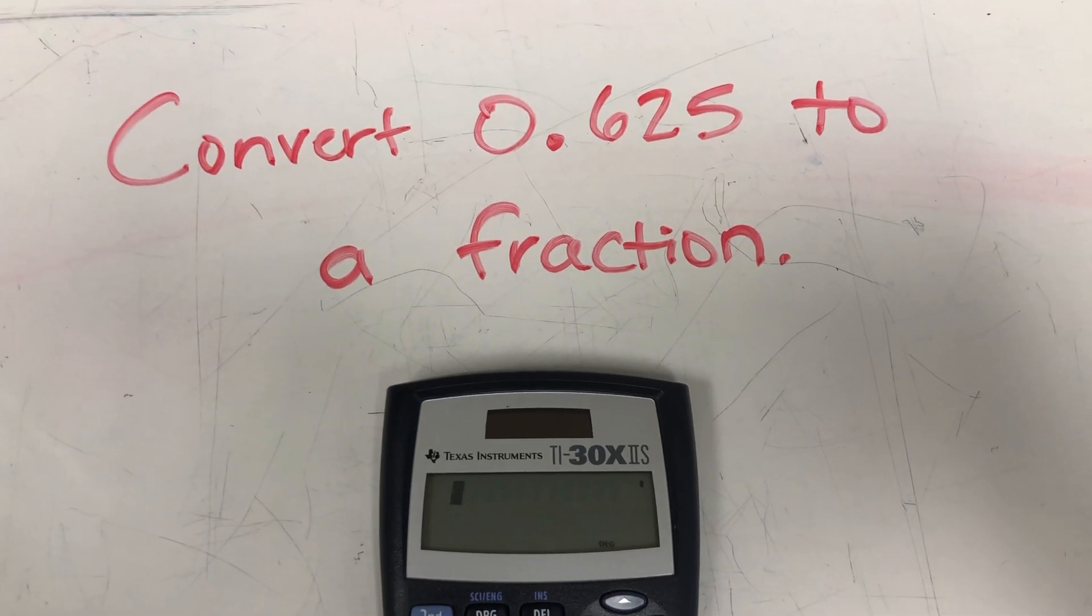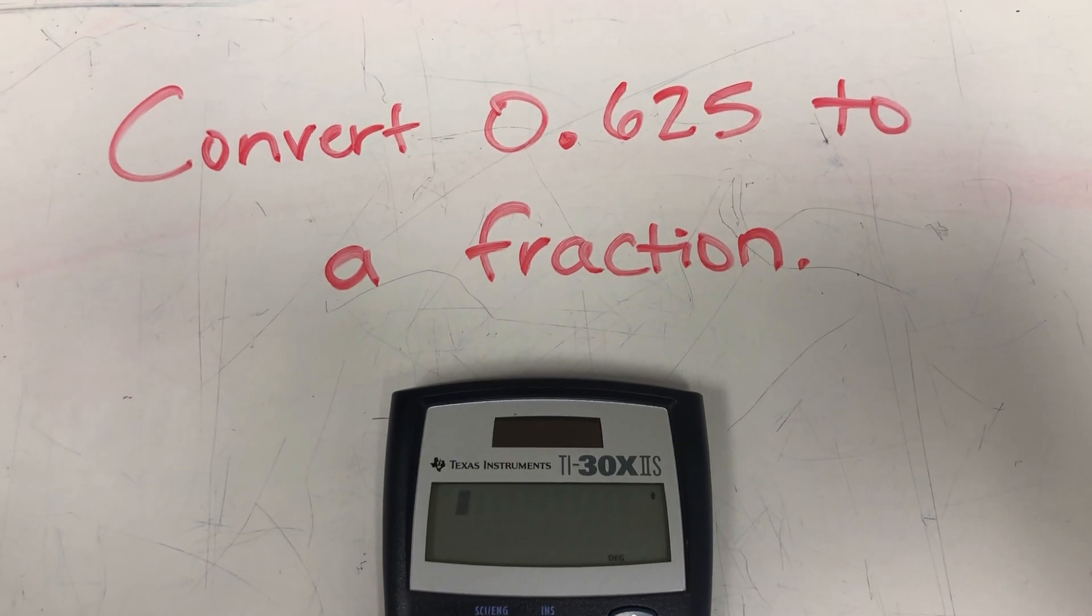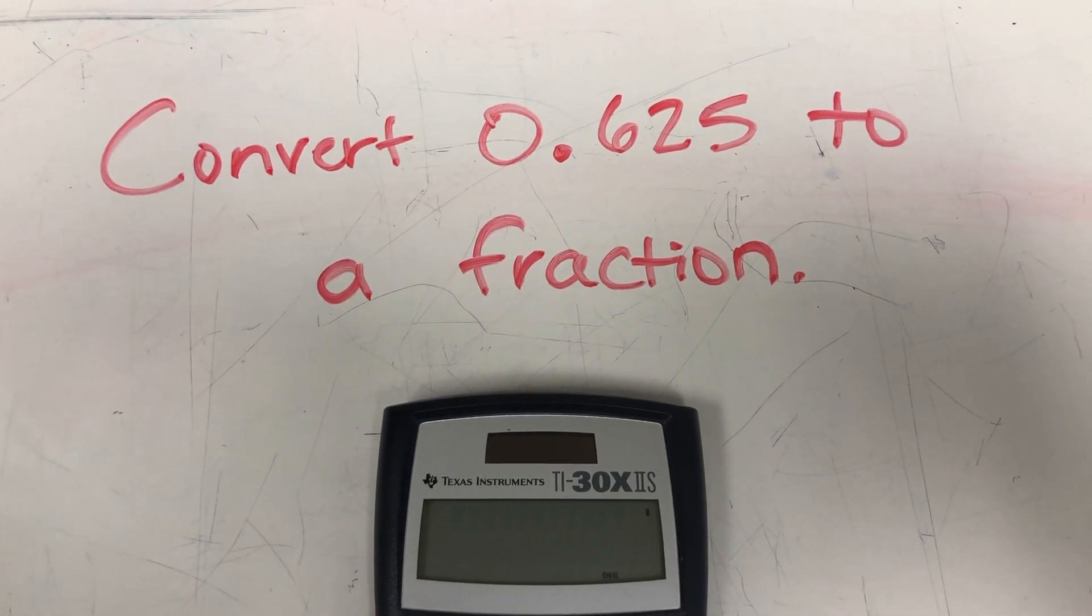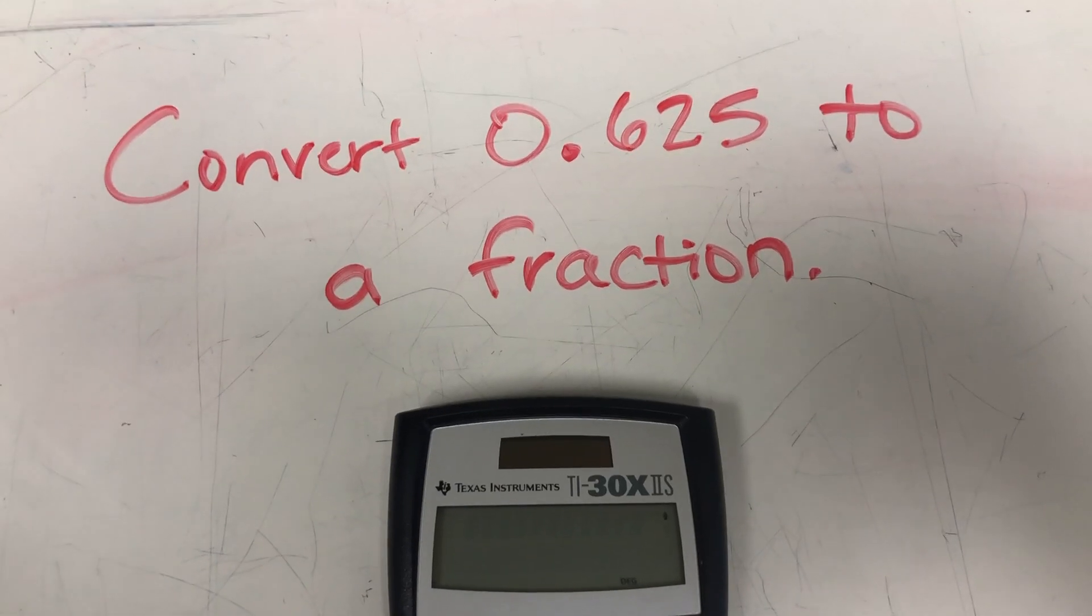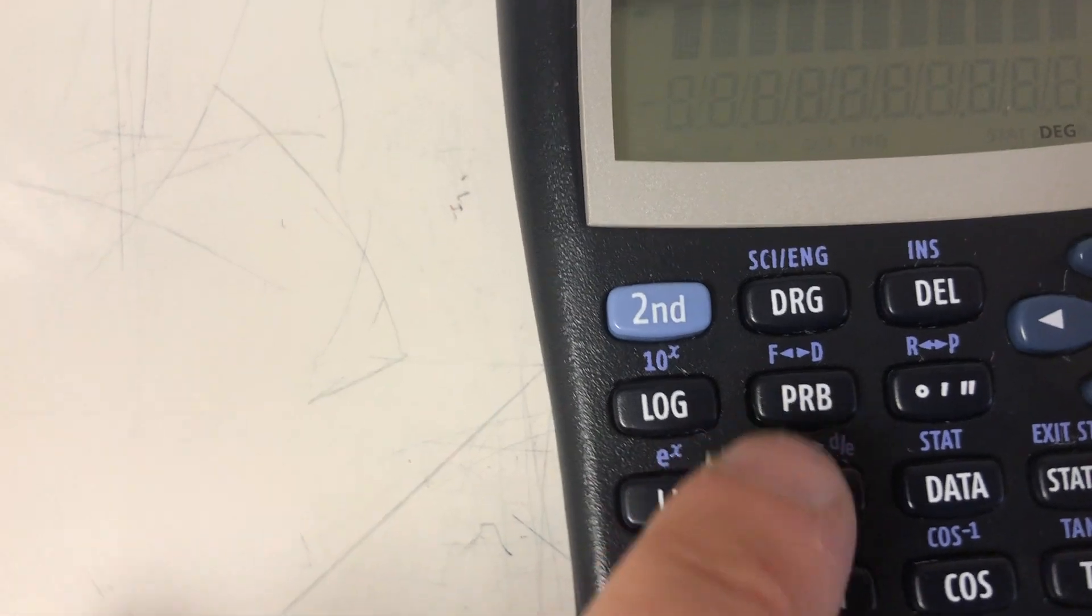All right, the final skill we're going to look at using our calculator is converting decimals to fractions. For this example, we have convert 0.625 to a fraction. Your calculator has a super handy button, but it's a little hard to find. It converts between fractions and decimals.